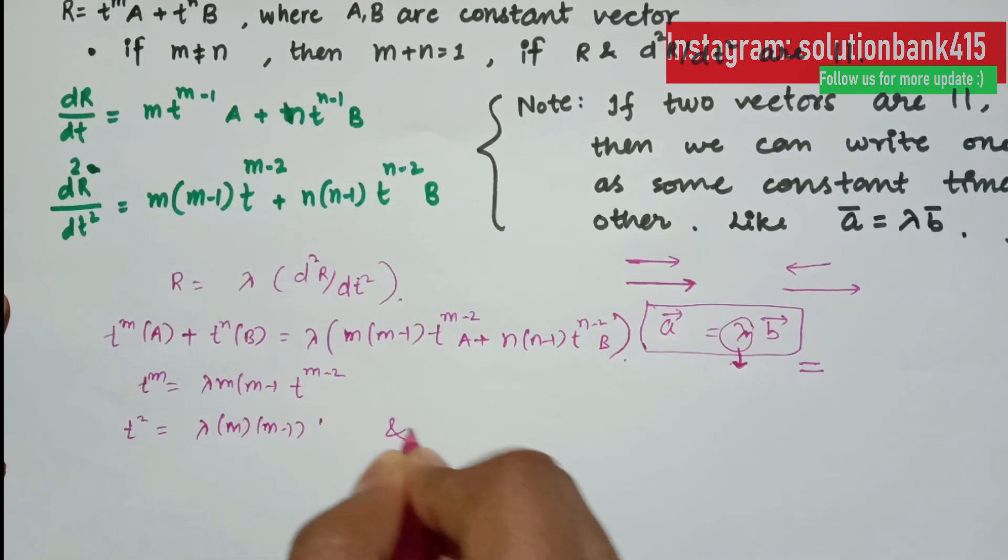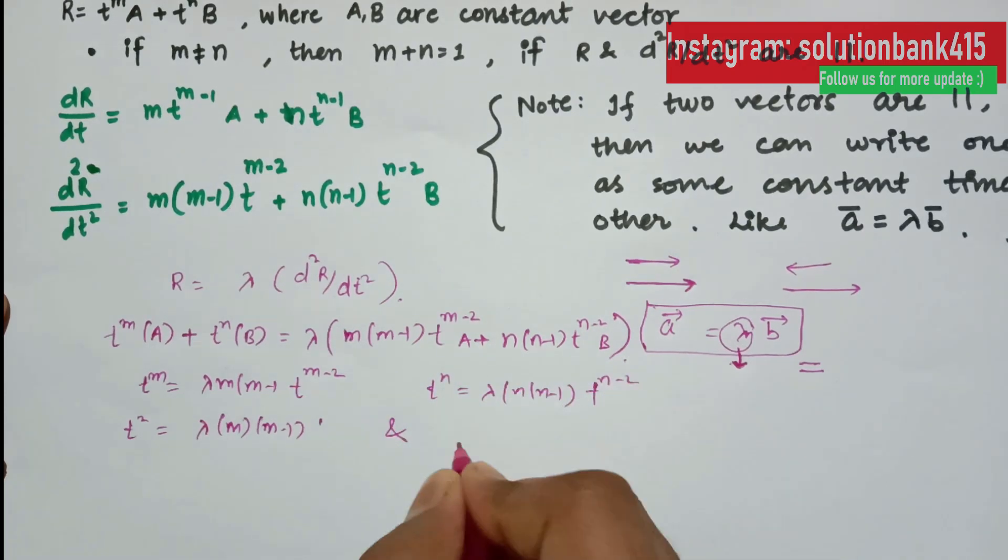By comparing both sides, t to the power m will equal lambda times m times m minus 1 times t to the power m minus 2, which gives us t squared equals lambda m times m minus 1. Consider this as equation 1 and equation 2. We will divide them.